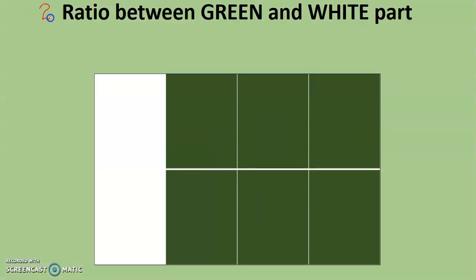Now coming to our second important ratio, which is between green and white part. Now here you can see this is a flag and how we have taken the ratio. The green part is one, two, three. So there are total three green parts, whereas there is only one white part. It means that the ratio between white and green part is one ratio three.